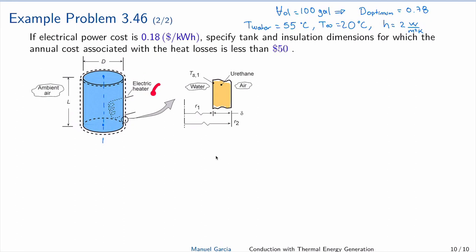The tank is insulated from the sides, the top, and the bottom with urethane. The question is: we would like to know the dimensions and thickness of the urethane for which the annual cost associated with the heat losses is less than $50.